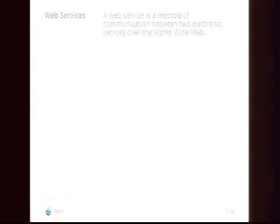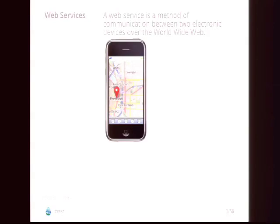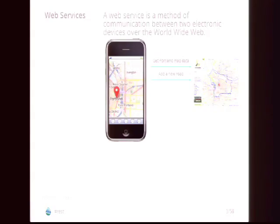That's a boring way of saying what you do every single day when you go on the web. Say you have an iPhone app connected to OpenStreetMap, and you send a request to get Portland map data or add a new road — OpenStreetMap is read-write. The two electronic devices are the client on your phone and the server that has all the data. A web service is basically a way of getting a command or operation from the client to the server.